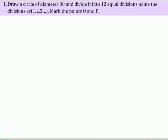Draw a circle of diameter 30 and divide it into 12 equal divisions. Name the divisions as 1, 2, 3, etc. Mark the points O and P.